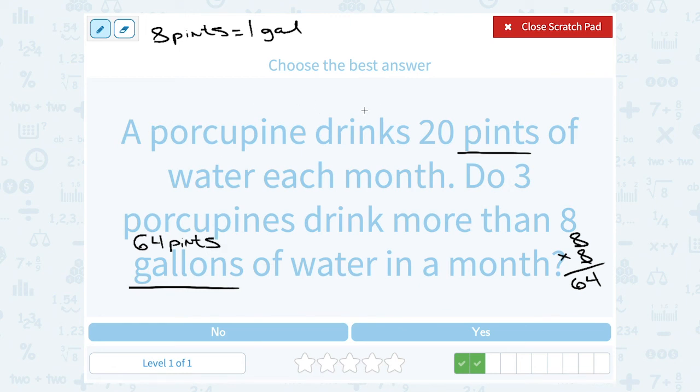So if a porcupine drinks 20 pints well 3 porcupines would drink 3 times as much as that. So 20 times 3. The amount each one drinks times how many porcupines we have. Well 20 times 3 is 60. 2 times 3 is 6. And you can just add the 0 on there since we're multiplying with 0 on the end or a number with a factor of 10. So that means our 3 porcupines drink 60 pints.